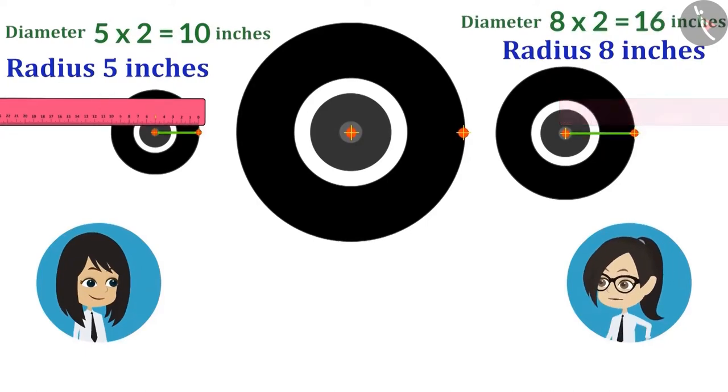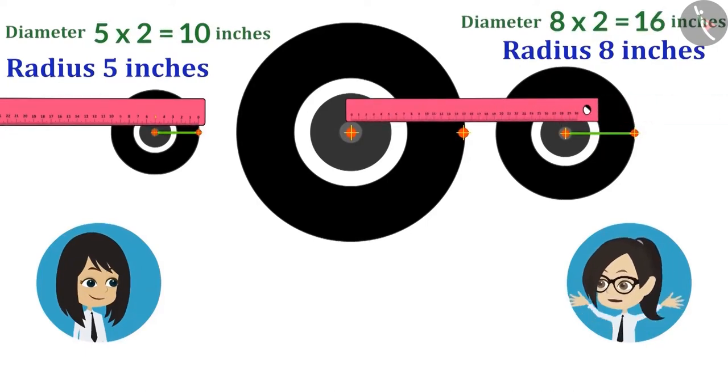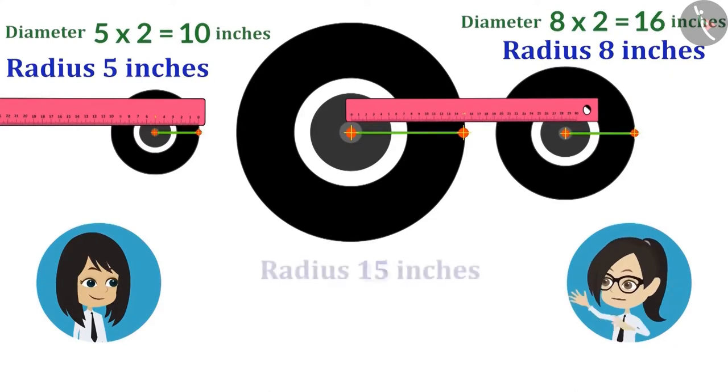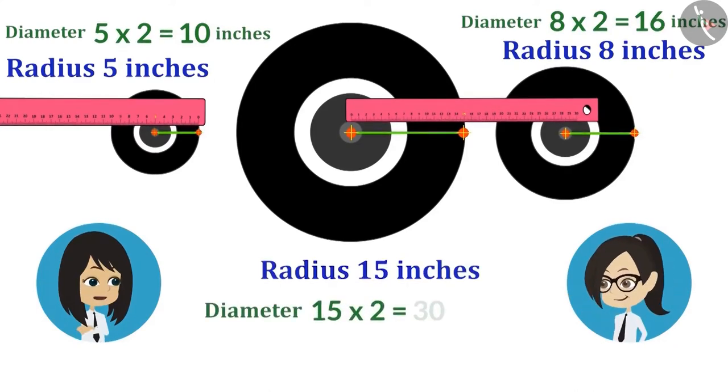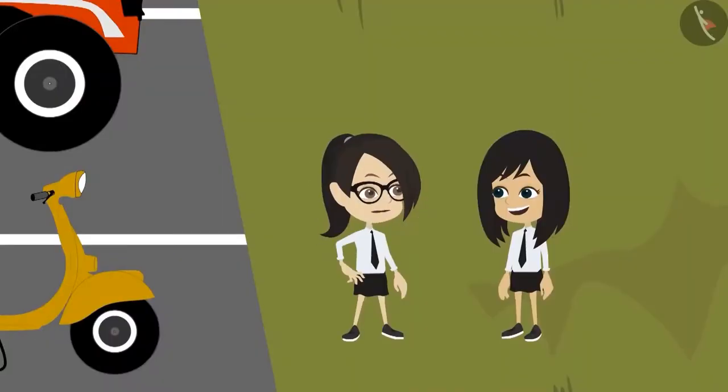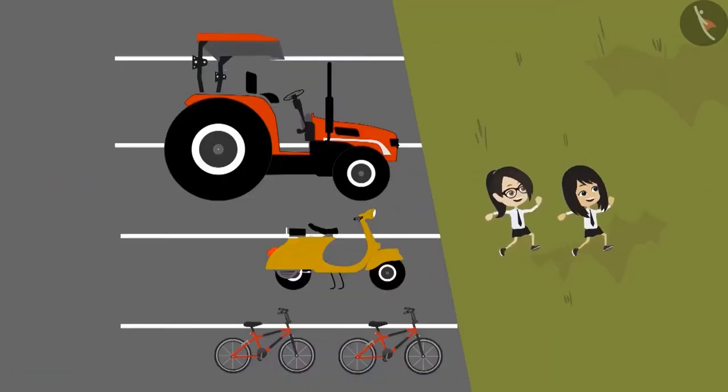And now it's the turn of the largest wheel of the tractor. Its radius is 15 inches. This means its diameter is 30 inches. We took the measurement of all the wheels and now let us tell sir.